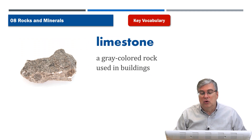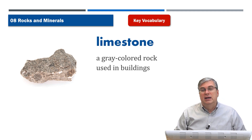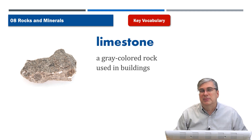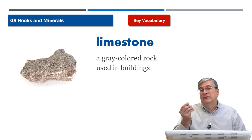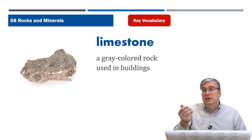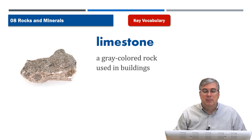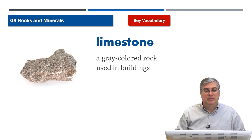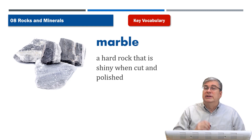Next we have limestone. Limestone is a gray colored rock used in buildings. It's a very hard type of rock. There are many types of rocks — some are harder than others, some crumble easily — but limestone is very tough and people use it to make buildings because it doesn't crumble or break apart easily.